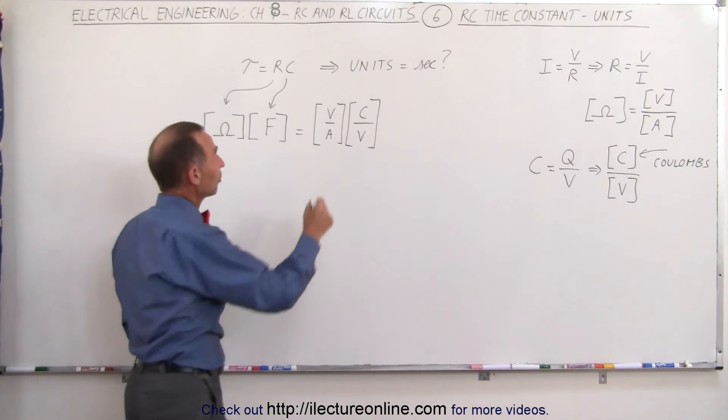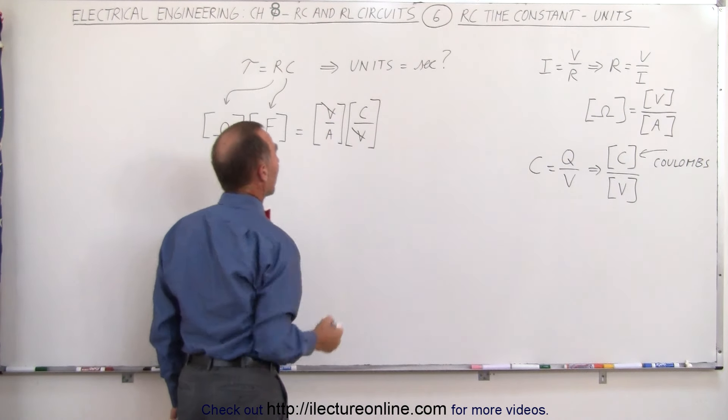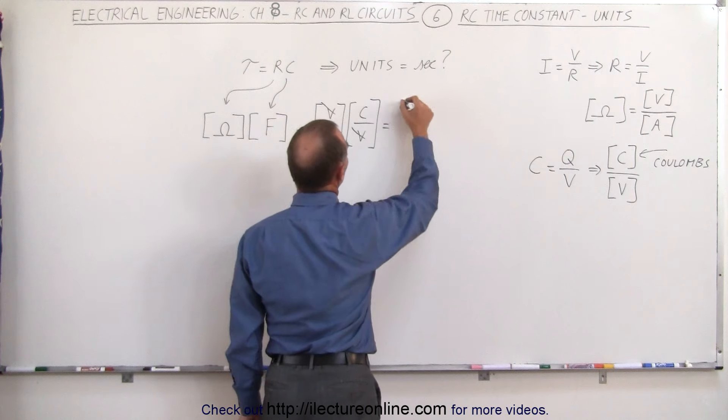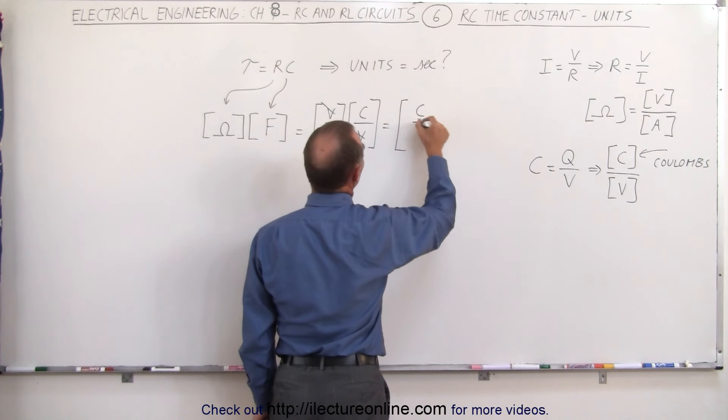Now we can see that we have voltage at the numerator, voltage at the denominator. So this simplifies to the ratio of coulombs divided by amps.